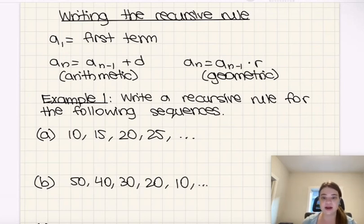So let's do it. Let's talk about how we would write these recursive rules for the following sequences. Well, there's three things we must do. We first must determine what type of sequence it even is, right? Are we using the arithmetic formula or the geometric formula?